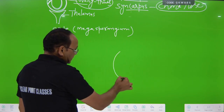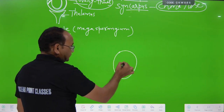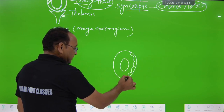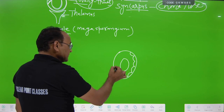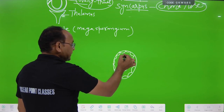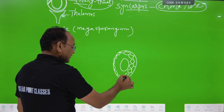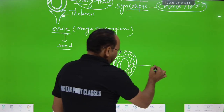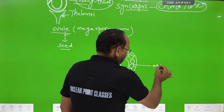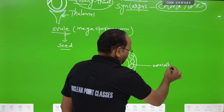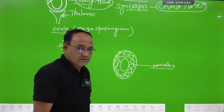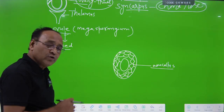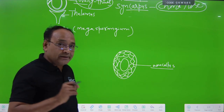The first part of the ovule is the nucellus, and it is made up of parenchymatous cells. Parenchymatous cells are dividable cells — cell division capacity is present in them. The nucellus is the central part of the ovule and is made up of parenchymatous cells.